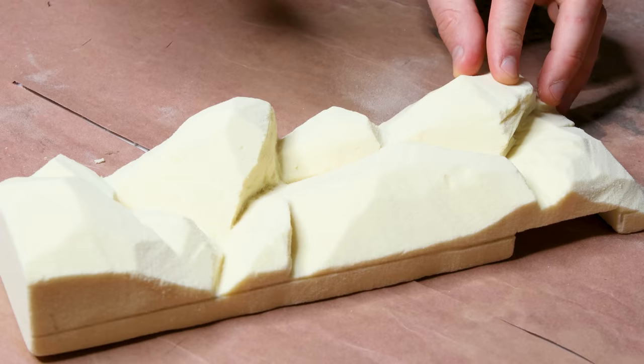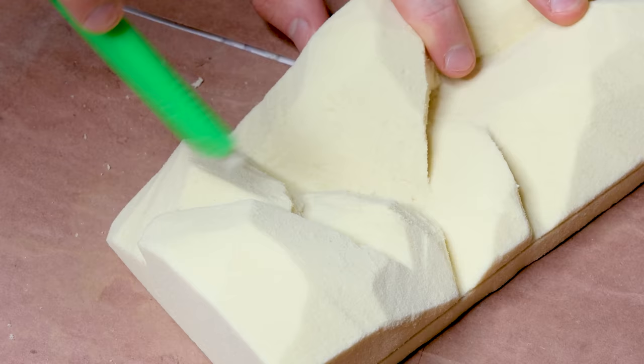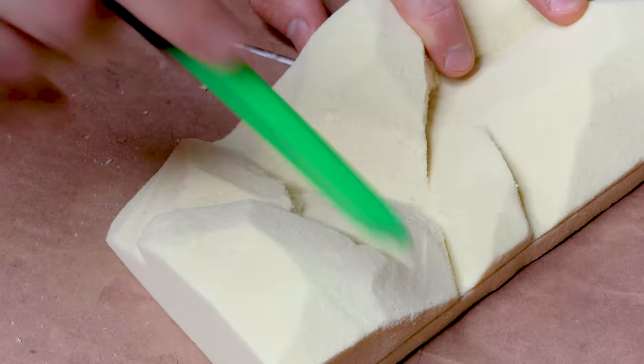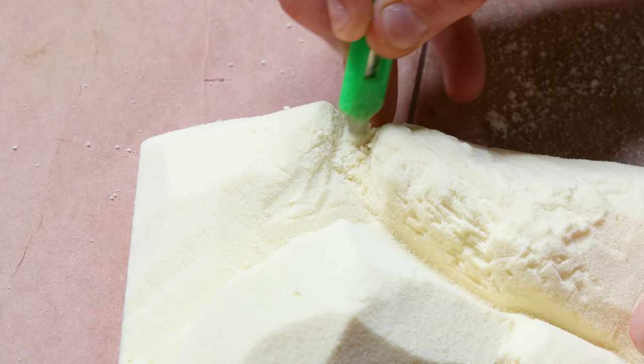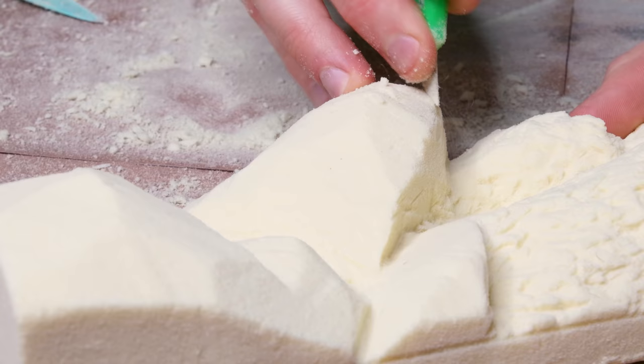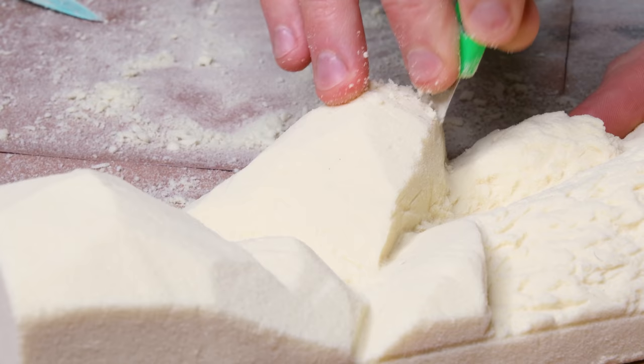I used the razor blade to do most of the carving from here. I went and scored the entire surface of the foam to loosen things up. Then I went back with a blade and added the fine details. I created grooves, divots, and gashes all over the surface.